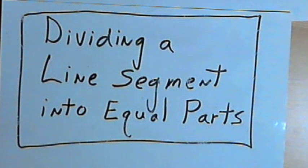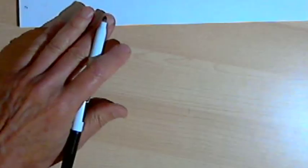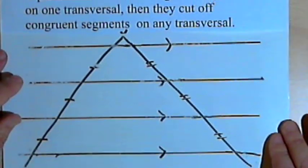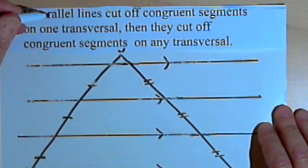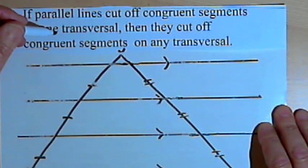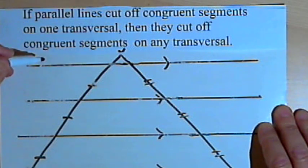Before the construction, though, I want to explain the principles that underlie it. So I've got a theorem. The theorem says if parallel lines cut off congruent segments on one transversal, then they cut off congruent segments on any transversal.